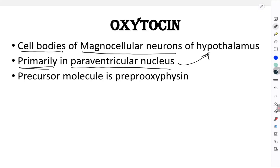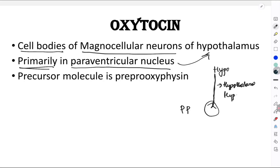To be more specific, oxytocin is synthesized in the cell bodies of what are called magnocellular neurons. Once synthesis takes place, this hormone is transported to the posterior pituitary, and the pathway connecting the hypothalamus to the pituitary is called the hypothalamo-hypophysial tract.